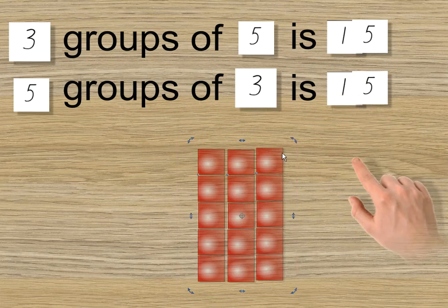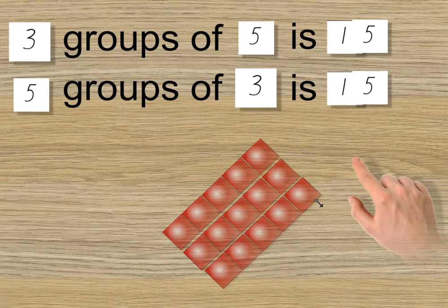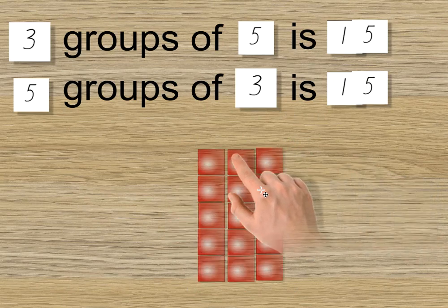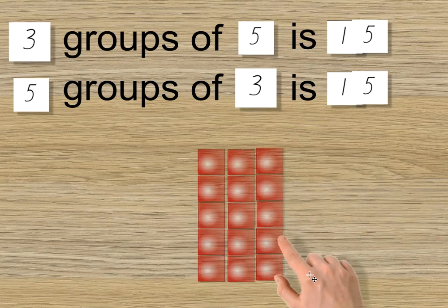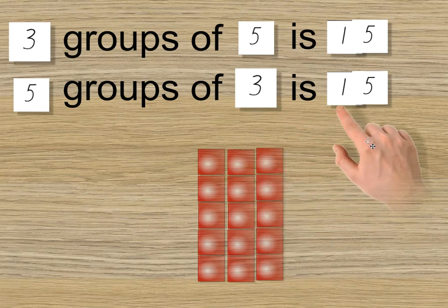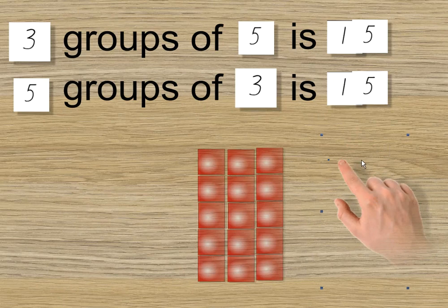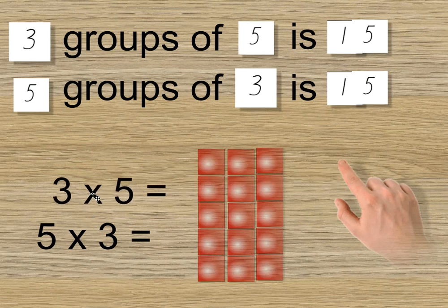So no matter which way you look at it, be it this way or that way, or if you count a group going this way or you count a group going up and down, you're going to end up with the same value at the end, the same product. That is all the candles all together. How can that be recorded? Well, like this or like this.